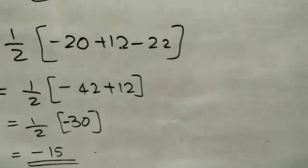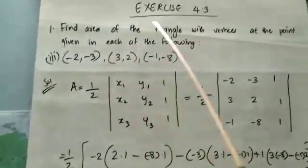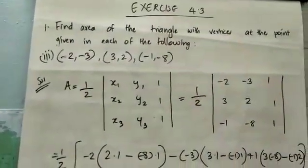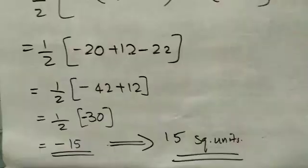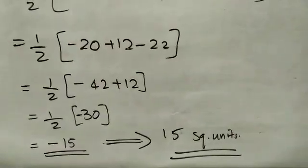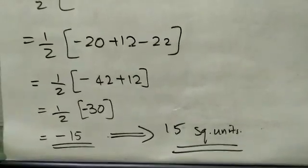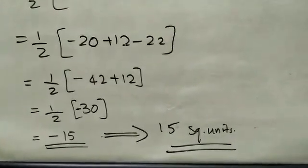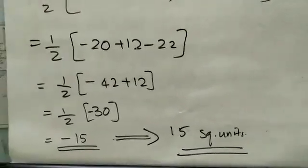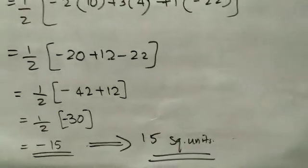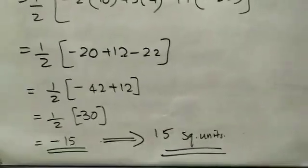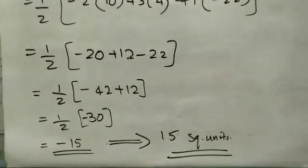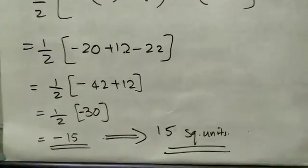But the area of a triangle must be positive or negative in value — we always take the absolute value. The determinant gave minus 15, so we drop the minus sign. The final answer is 15 square units.